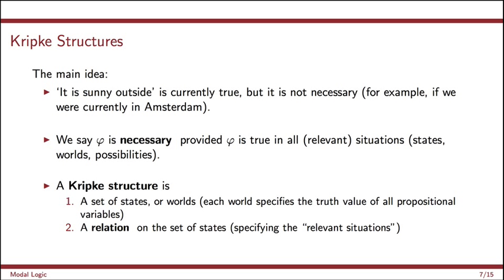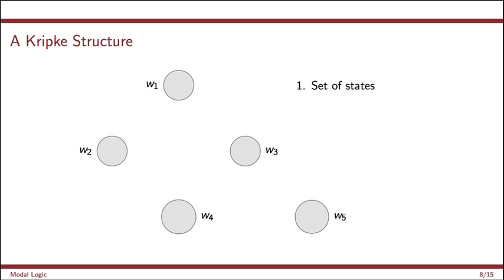A Kripke structure just gives you the machinery to make this idea formal. So it contains essentially two parts. A set of states or worlds, these are the possibilities that we're quantifying over. And a relation on those set of states or worlds that tells you which are the relevant situations at each possible state. So for example, this is a Kripke structure. We start off with a set of states. So we'll typically say W is equal to W1, W2, W3, W4, and W5. So there are five states here.